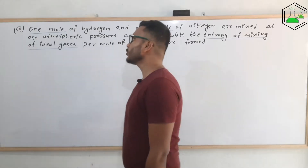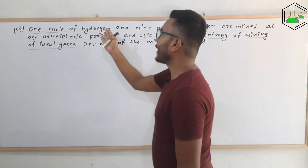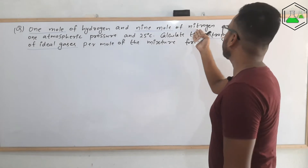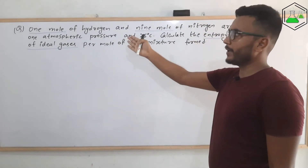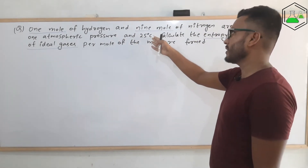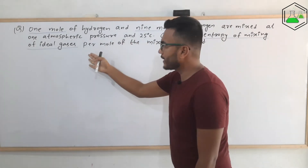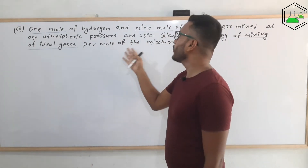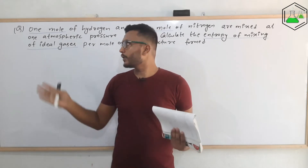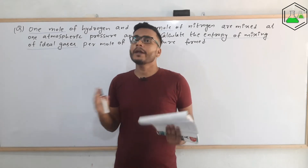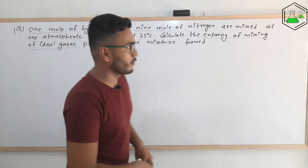This is the question of the first numerical problem. 1 mol of hydrogen and 9 mol of nitrogen are mixed at 1 atmospheric pressure and 25 degree Celsius. Calculate the entropy of mixing of ideal gases per mole of the mixture formed. That means we need to calculate the value of entropy of mixing of ideal gases.